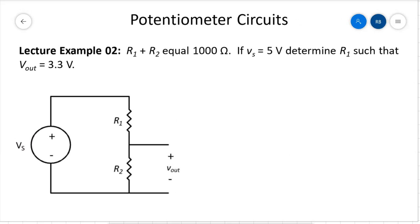Moving to our next example — a potentiometer circuit. Potentiometers have values associated with them. The value of a potentiometer is equal to R1 plus R2, and there's a sliding scale connector in the middle that changes the ratio of R1 to R2. So a 1K pot — as we turn the dial — changes this R1-to-R2 ratio. In this case, we have a 5-volt supply to our potentiometer, so Vs equals 5 volts.